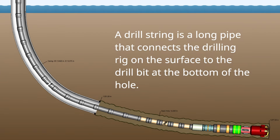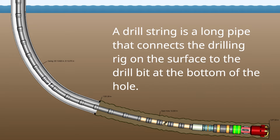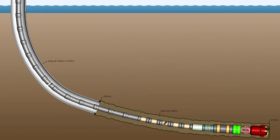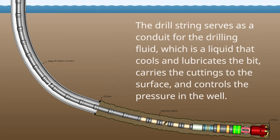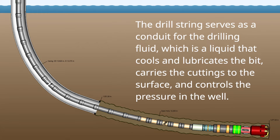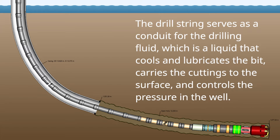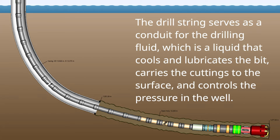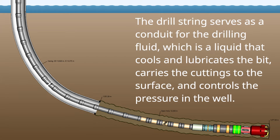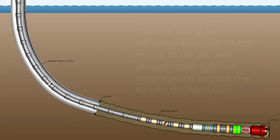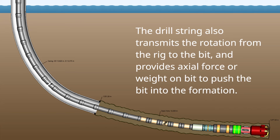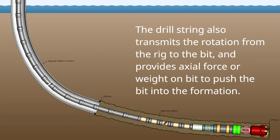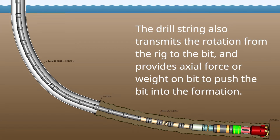First of all, what is a drill string? A drill string is a long pipe that connects the drilling rig on the surface to the drill bit at the bottom of the hole. The drill string serves as a conduit for the drilling fluid, which is a liquid that cools and lubricates the bit, carries the cuttings to the surface, and controls the pressure in the well.